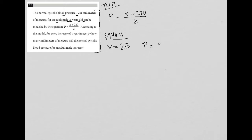I'd get P equals 25 plus 220 divided by 2, which turns into 245, 245 divided by 2. And then I go to my calculator, and I see that 245 divided by 2 is 122.5. So that's the blood pressure now.